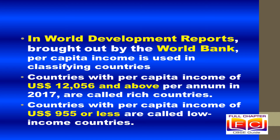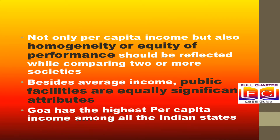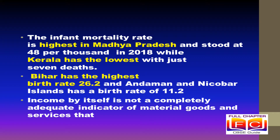Countries with higher income are more developed than others with less income. As different countries have different populations, comparing total income will not tell us what an average person earns. So, we compare the average income of countries. Average income is the total income of the country divided by its total population. It is also called per capita income. In world development reports brought out by the World Bank, per capita income is used in classifying countries.